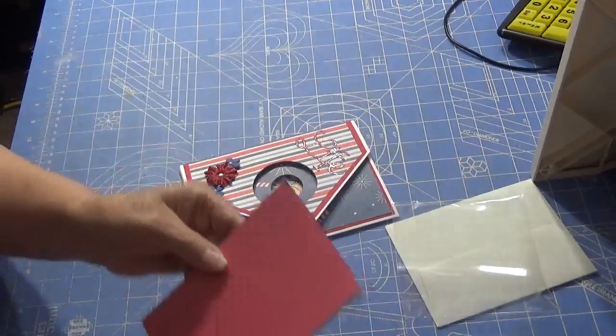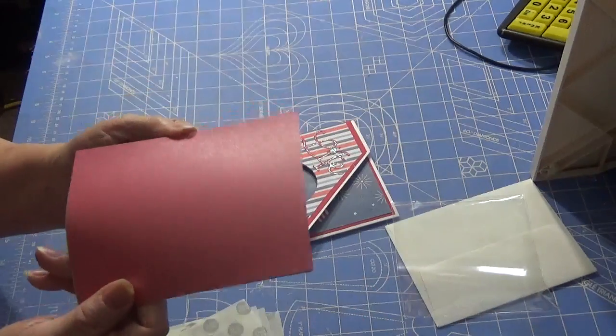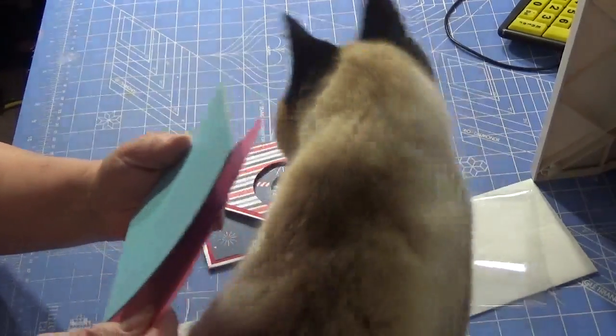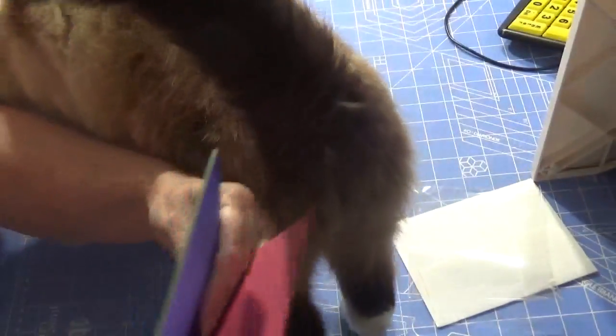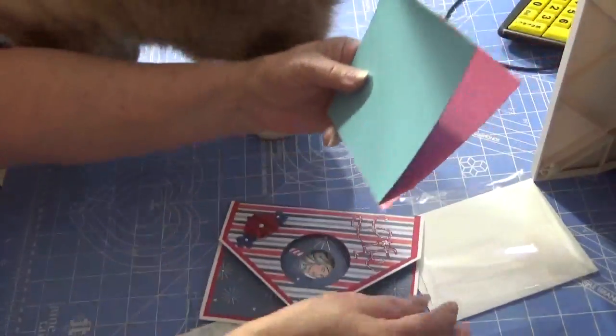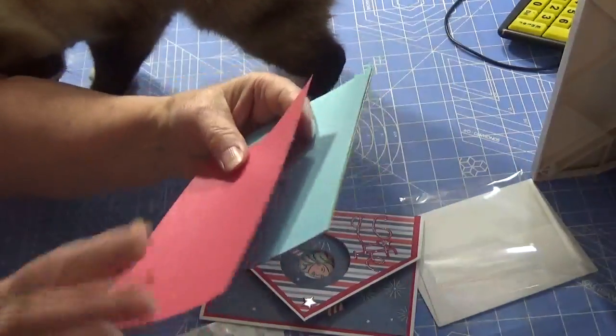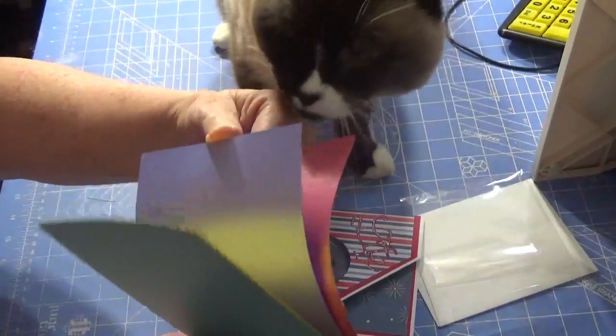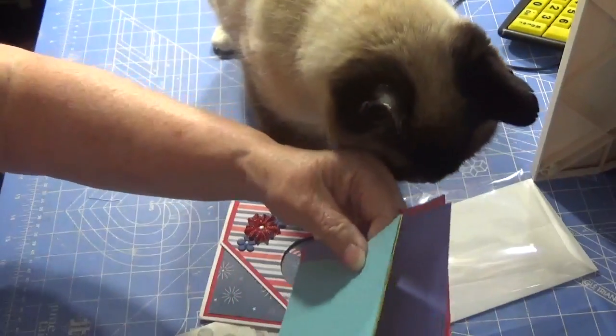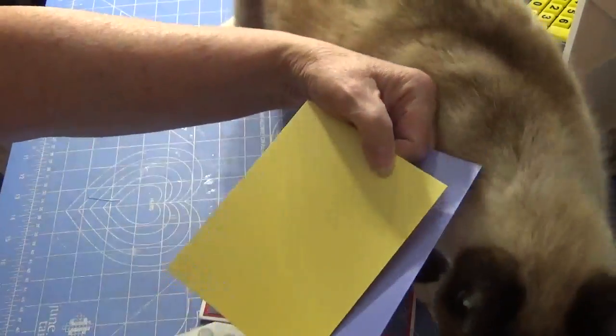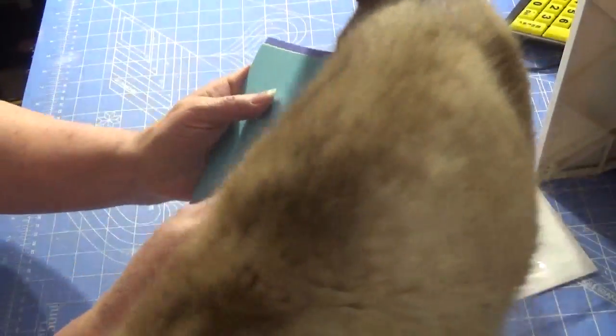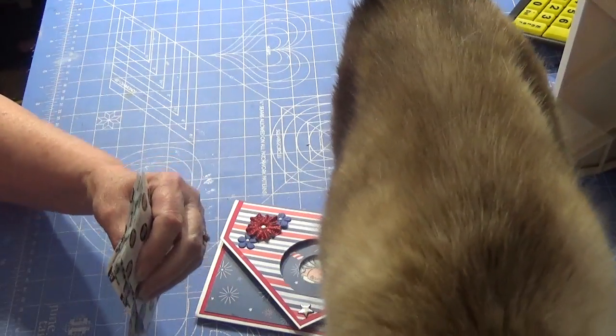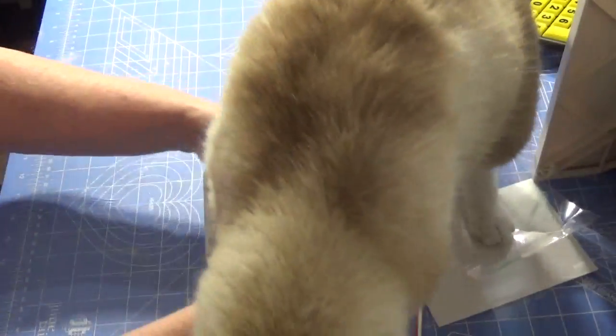But first let me show you she sent me this beautiful paper and it's shiny, it's real shiny, not glittery but really pretty shiny paper. It's got some beautiful colors, look at this yellow, oh that is gorgeous. Well this is Max my Siamese, he decided to come and visit me for a moment here.